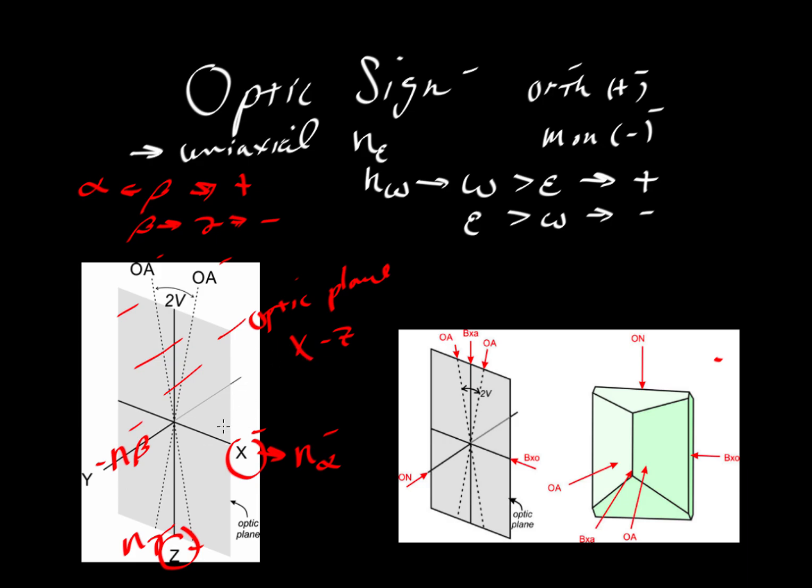Keep in mind, those do not necessarily correspond to crystallographic axes. Within that optic plane are the two optic axes as shown here. This is effectively the same diagram.